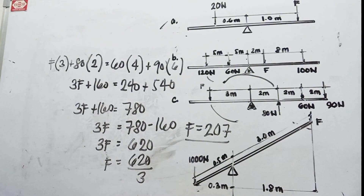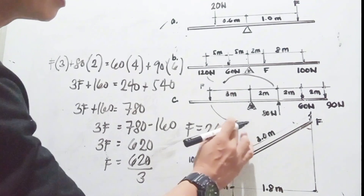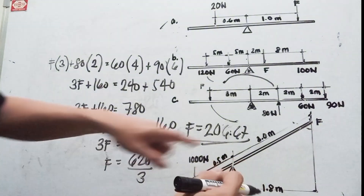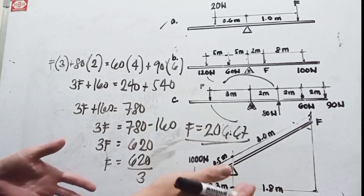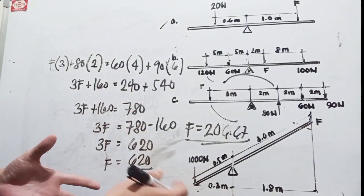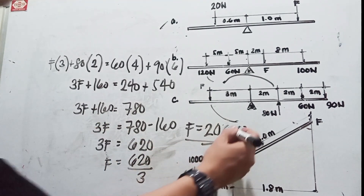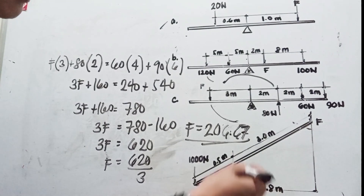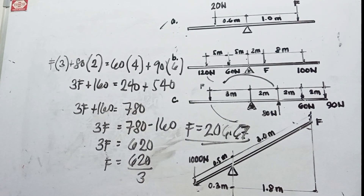Rounding it off: F equals 206.67 Newtons. We need a force of 206.67 for the system to be in equilibrium. You could check your answer like we did before. Our answer should be until the second decimal place, and 0.6666 rounds to 0.67. Hopefully you understood this third problem.